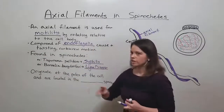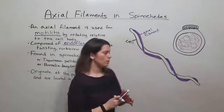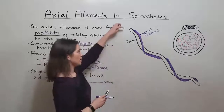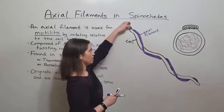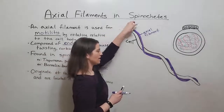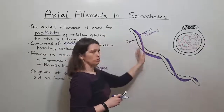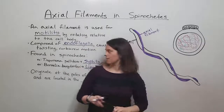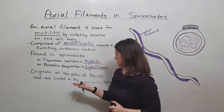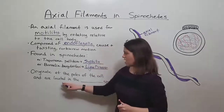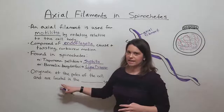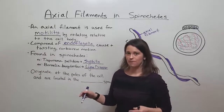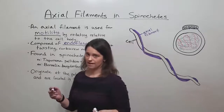They originate at the poles of the cells — the poles meaning the ends — and that's what's shown here. The axial filament starts at one end and then wraps around the cell towards the other end.